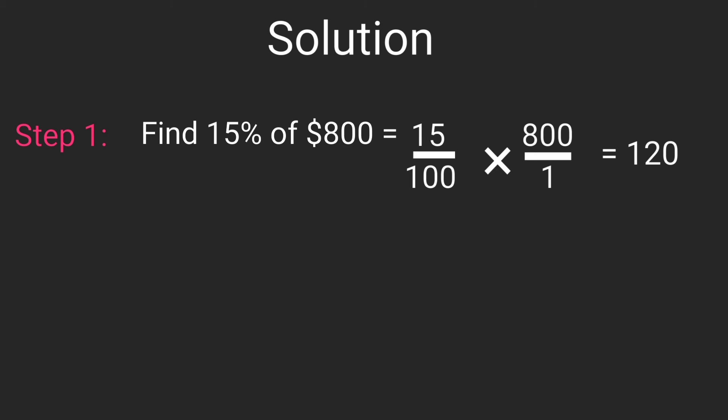That means at the store, the seller adds $120 to the supplier's cost. So the price of a pair of pants at the store is $120 plus $800, which is $920.